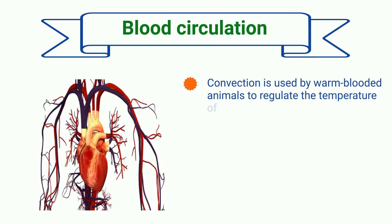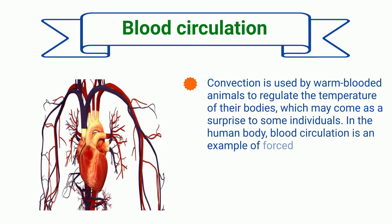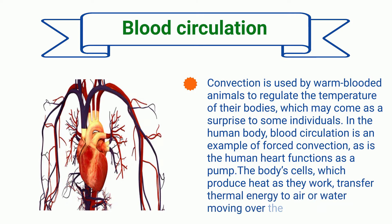Blood circulation: Convection is used by warm-blooded animals to regulate their body temperature. In the human body, blood circulation is an example of forced convection. The human heart functions as a pump. The body's cells produce heat as they work and transfer thermal energy to air or water moving over the skin.